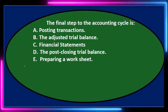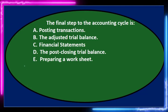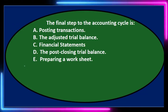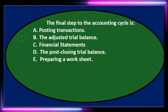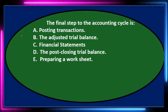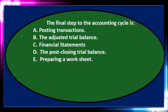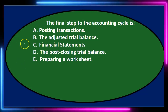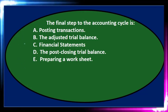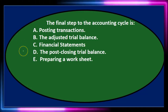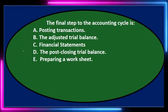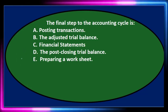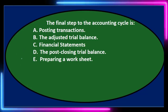Next question. The final step in the accounting cycle is: A, posting transactions; B, the adjusted trial balance; C, financial statements; D, the post-closing trial balance; and E, preparing a worksheet.